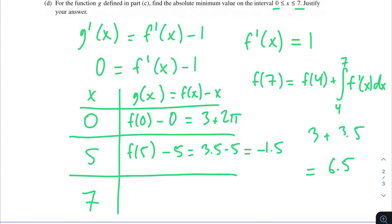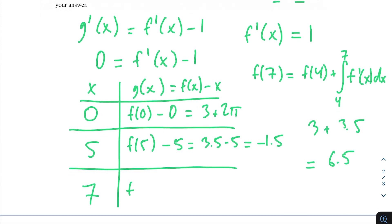Going back to g(x), f(7) - 7 equals 6.5 - 7 = -0.5. Next comes comparing all the values from our candidate test. We're comparing 3 + 2π, -1.5, and -0.5, and we're trying to find the absolute minimum value. It looks like that would be -1.5 because that is the smallest value out of all of the candidates.